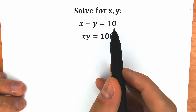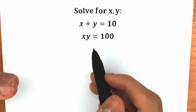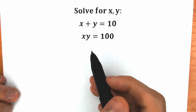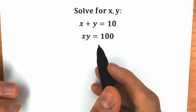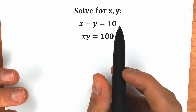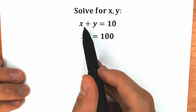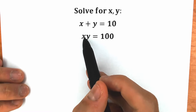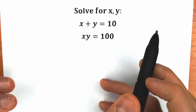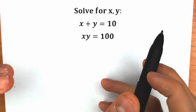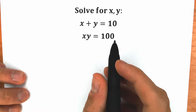x plus y equals 10, and the product xy equals 100, and we need to find x and y. We can't do that by inspection, because it's really hard to guess two numbers whose sum is 10 and whose product is 100. So let's try to solve it algebraically, step by step.